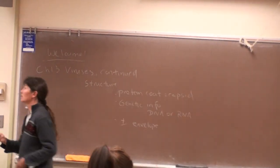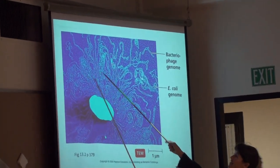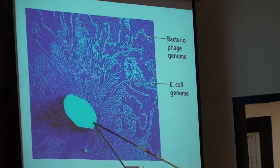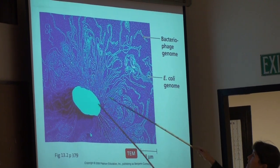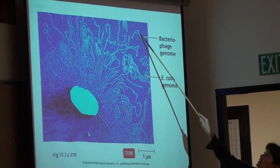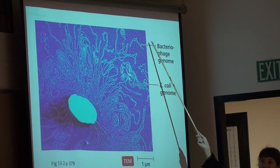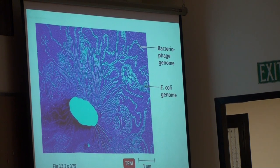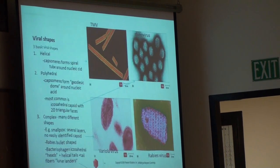Here is a visual: an E. coli that has been lysed. All of the spaghetti strands here are the single chromosome of the E. coli — phenomenal how it fits into that cell. Up here is a little bacterial virus's genetic information. We can see size-wise that the viral genetic information is far less than that of even one of the smallest bacteria.